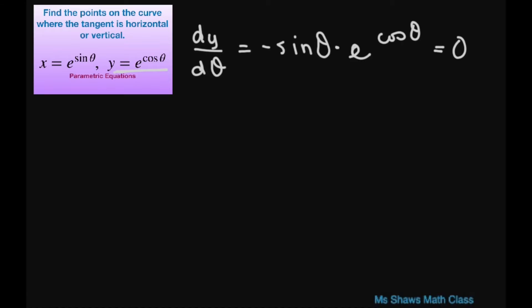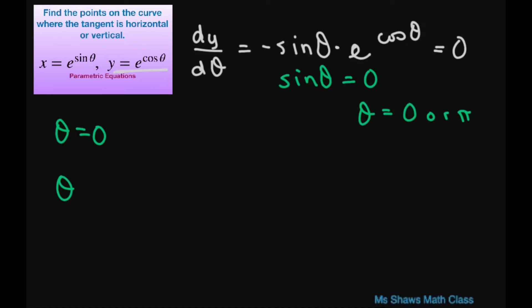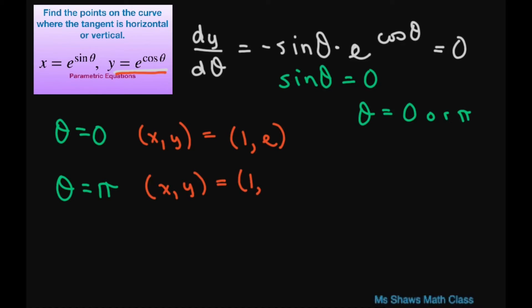The only way this can be zero is if sine of theta equals zero, and sine of theta equals zero when theta equals zero or pi. So for theta equals zero: substituting into x gives 1, and e to the power of zero is just 1. Substituting zero into y gives cosine of zero equals 1, so that's just e. For theta equals pi: x is again 1, and cosine of pi is negative 1, so y is e to the power of negative 1, or 1 divided by e. So these are your horizontal tangent points.